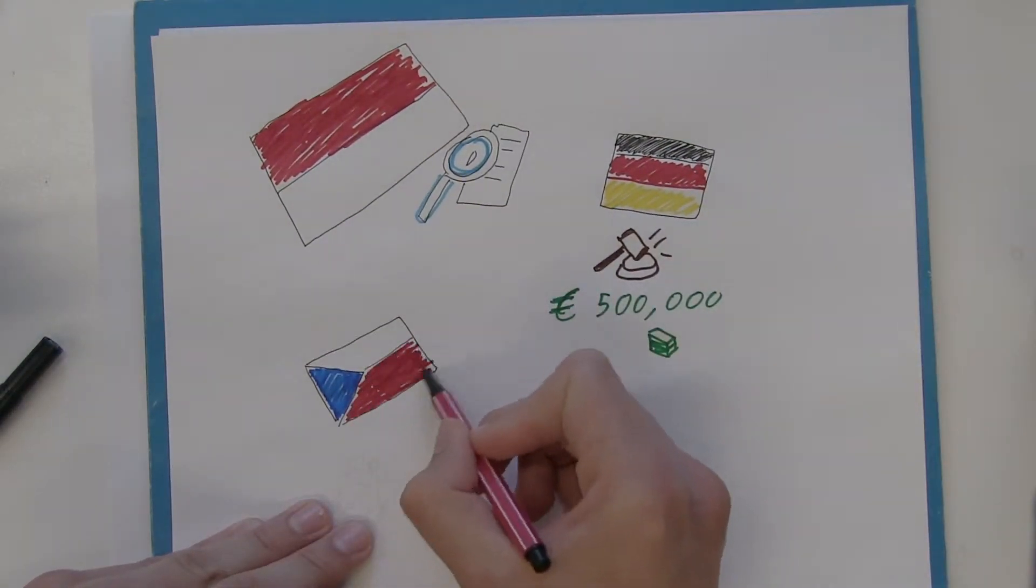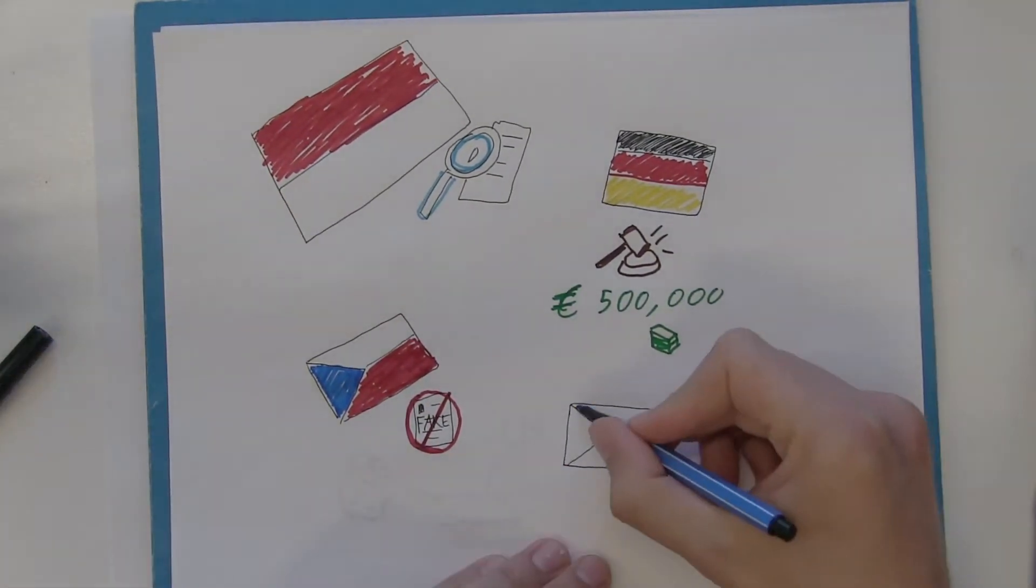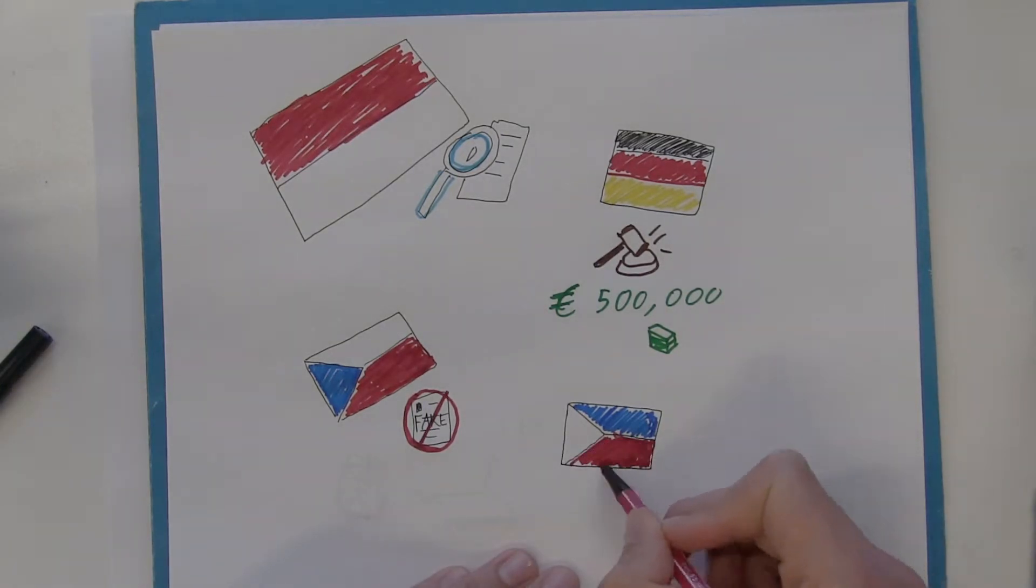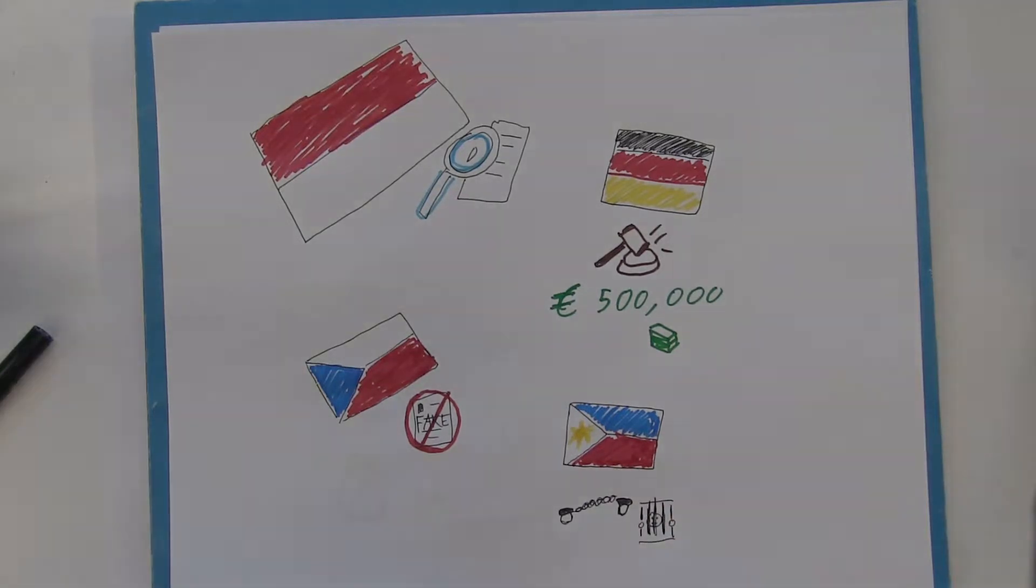The Czech government is setting up an anti-fake news unit to monitor their websites, and the Philippines is attempting to imprison those who willingly publish or distribute fake news. Clearly, action is being taken in governments around the world. Will its action be successful and sustainable?